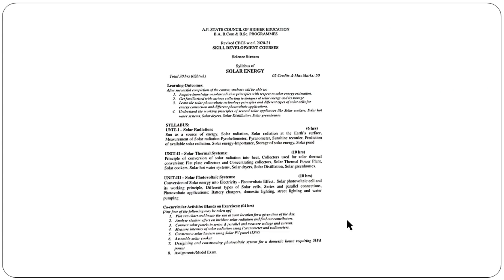This is the solar energy syllabus. It is 3 units and this paper weight is 50 marks. We have 2 sections. Section 1 has 8 questions, we attempt 4 and each question carries 5 marks, so 4 times 5 is 20. Section 2 has 5 questions, we attempt 3 and each question carries 10 marks, so 3 times 10 is 30. So 30 plus 20 is 50 marks total.